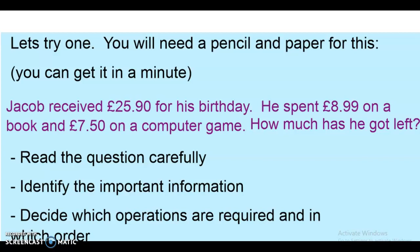So hopefully you've got an answer now. Let's go through what you did. Identifying the important information. Jacob starts off with £25.90. That is an important amount of information. He then spent, which means we are taking away £8.99 on a book and £7.50 on a computer game. So again, we're taking that away. That was the clue in the question. Then how much has he got left over?